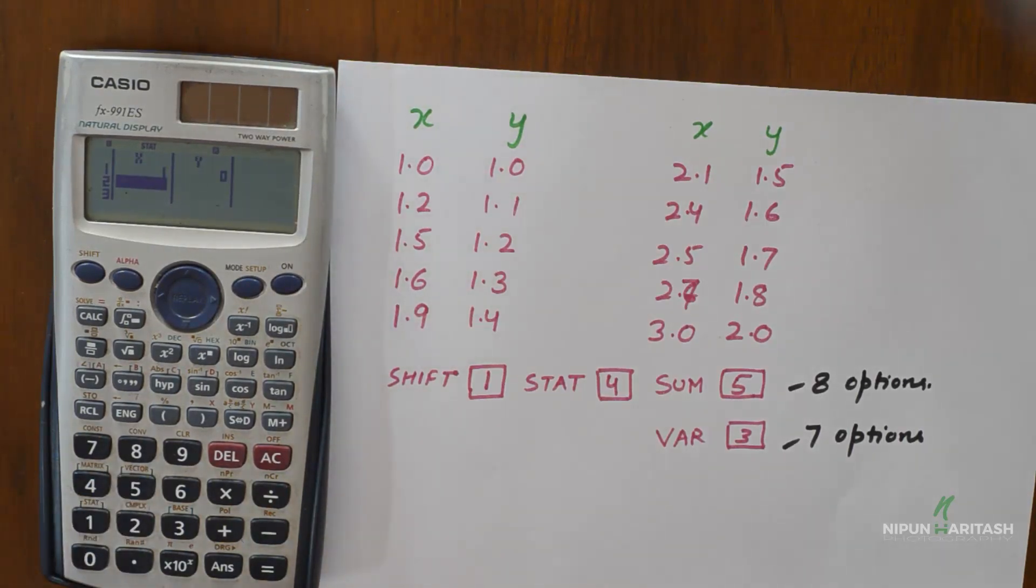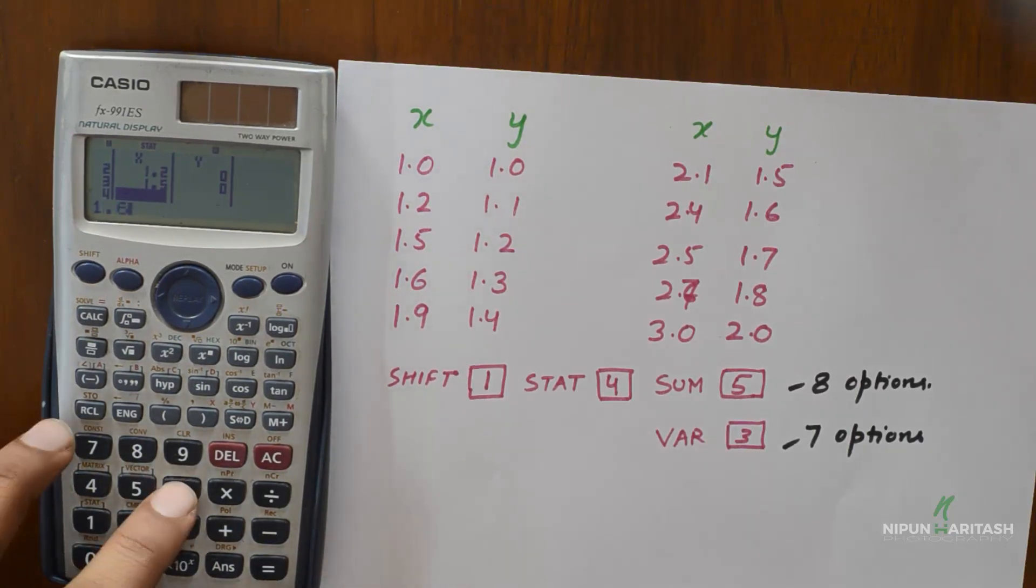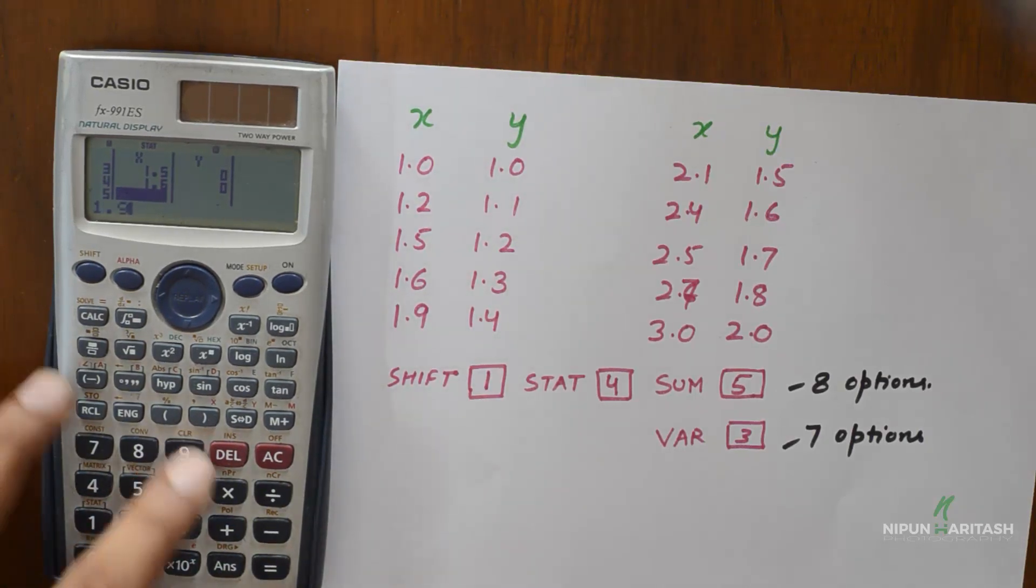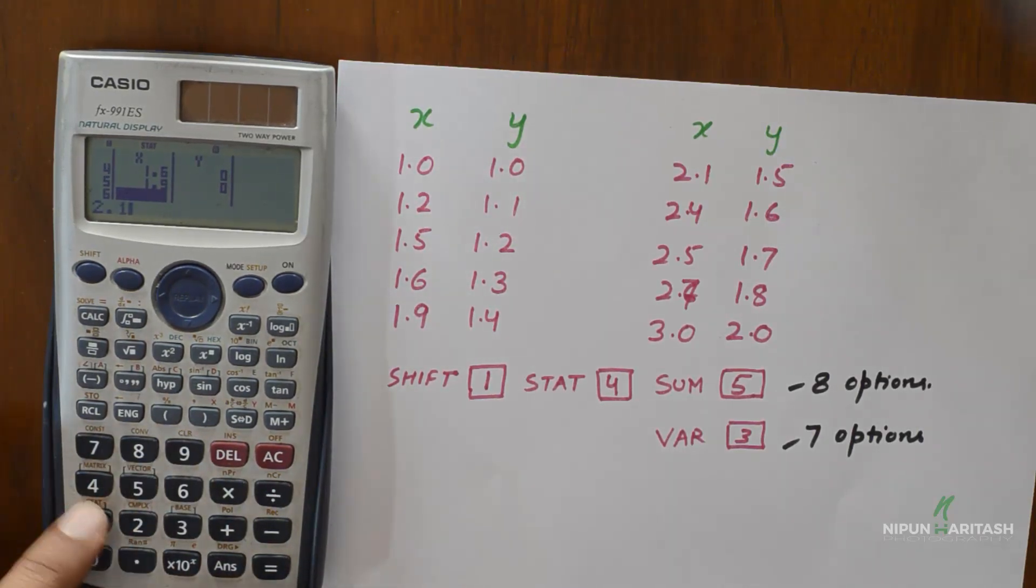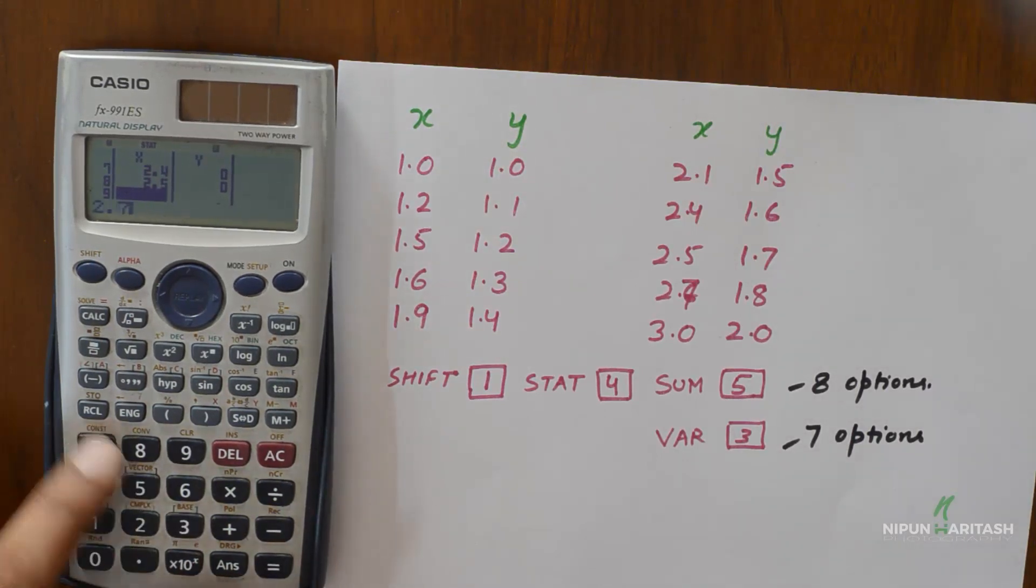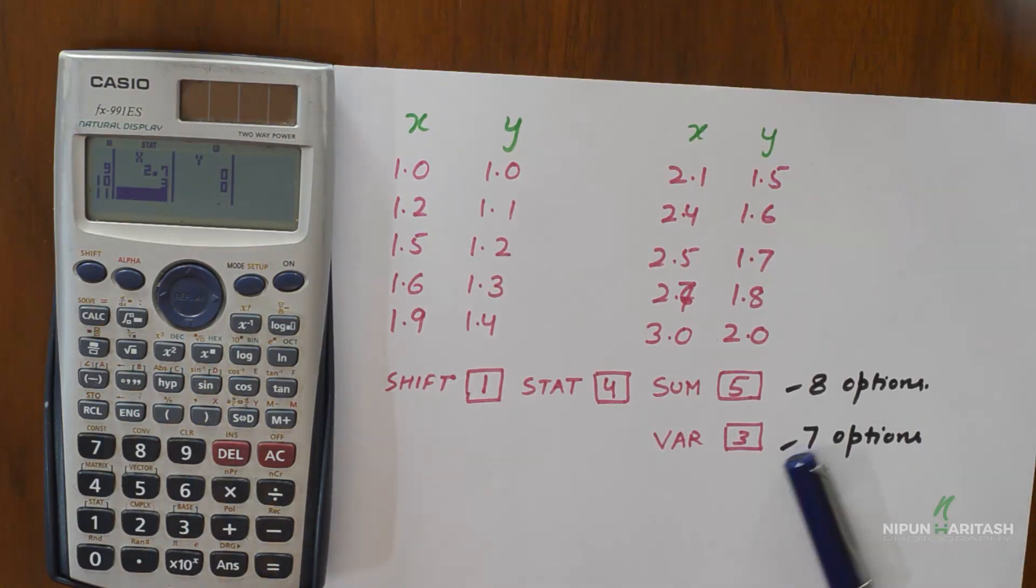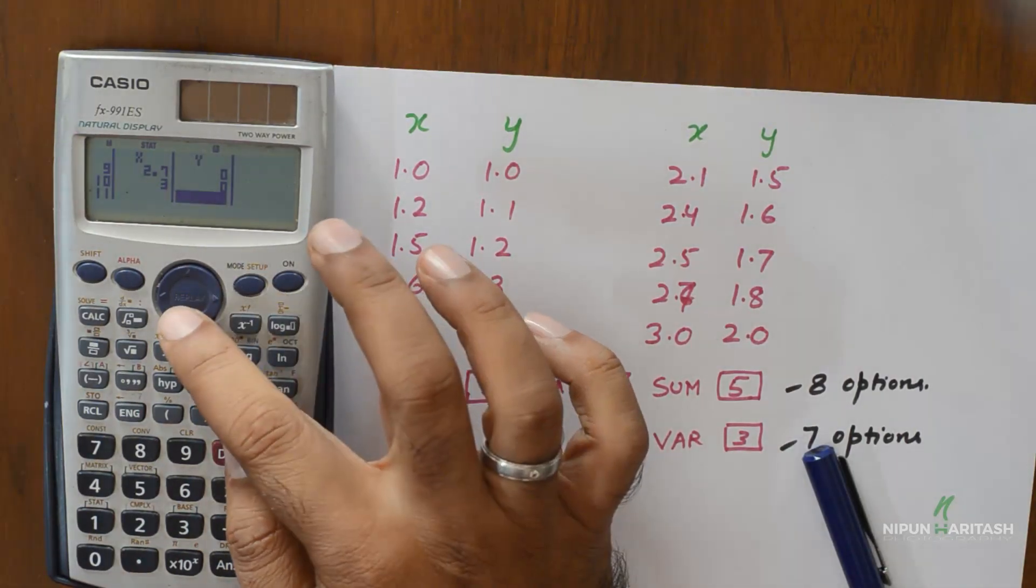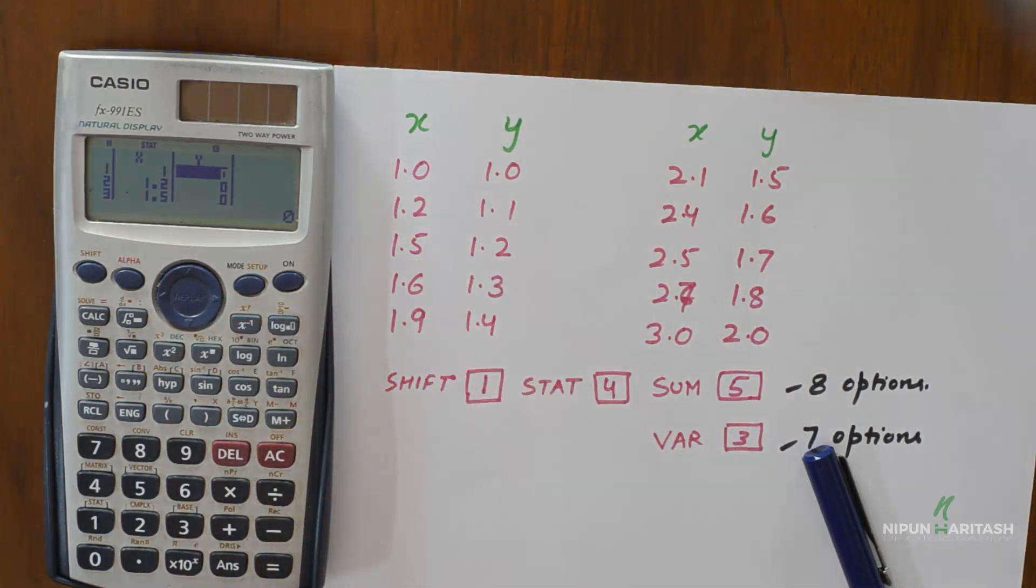So now I am entering the values for x. Alright. Now once you have entered the values for x, then you could press the side arrow and then press the down arrow and it will take you to the top for the next column. Let's start entering the values for y quickly.